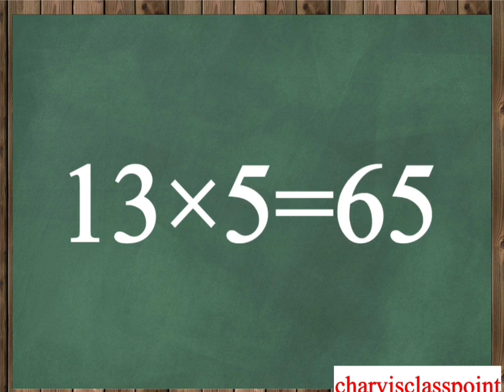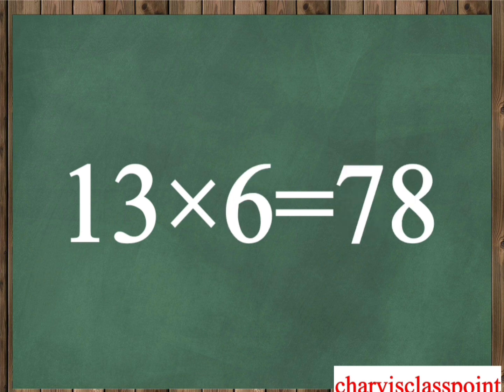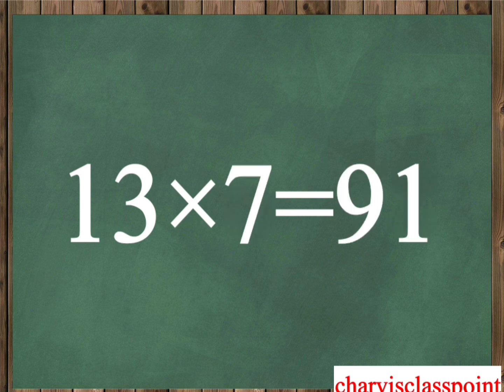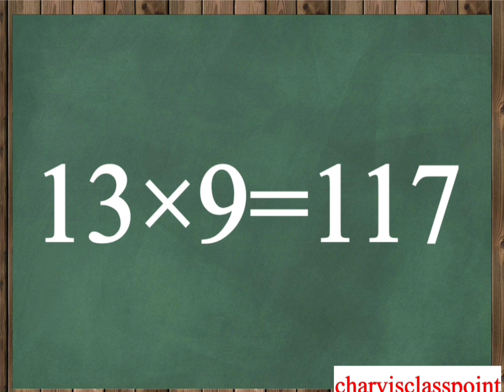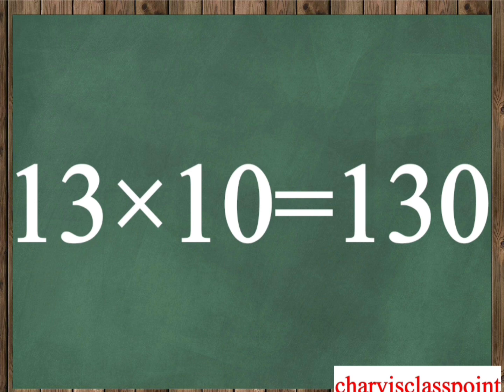Thirteen five is sixty-five. Thirteen six is seventy-eight. Thirteen seven is ninety-one. Thirteen eight is one hundred four. Thirteen nine is one hundred seventeen. Thirteen ten is one hundred thirty.